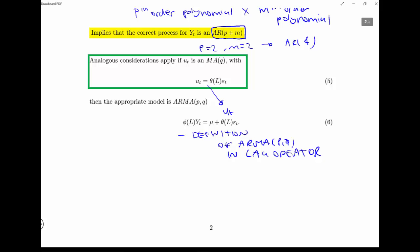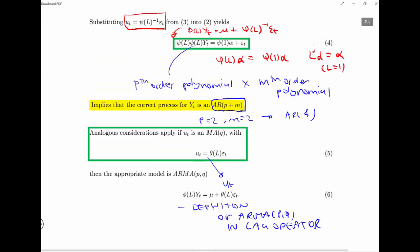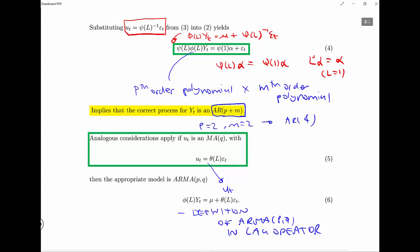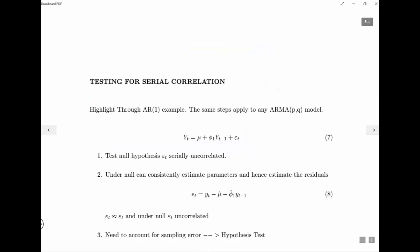That's quite general: if we have an AR(p) model with AR(m) errors we get AR(p+m), and if we have an AR(p) model with MA(q) errors then we have an ARMA(p,q) model. The same can be done for any model — there's not really any statistics going on here, we're just solving and rearranging equations. Now let's move on to testing for serial correlation.